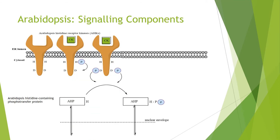Tracking the signaling: there is binding of the cytokinin, then a conformational change in the receptor to favour the kinase over the phosphatase, leading to a phosphorylated histidine residue on the receptor itself. There is then a transfer of that phosphate from the histidine to the aspartate within the receiver domains at the C-terminus.